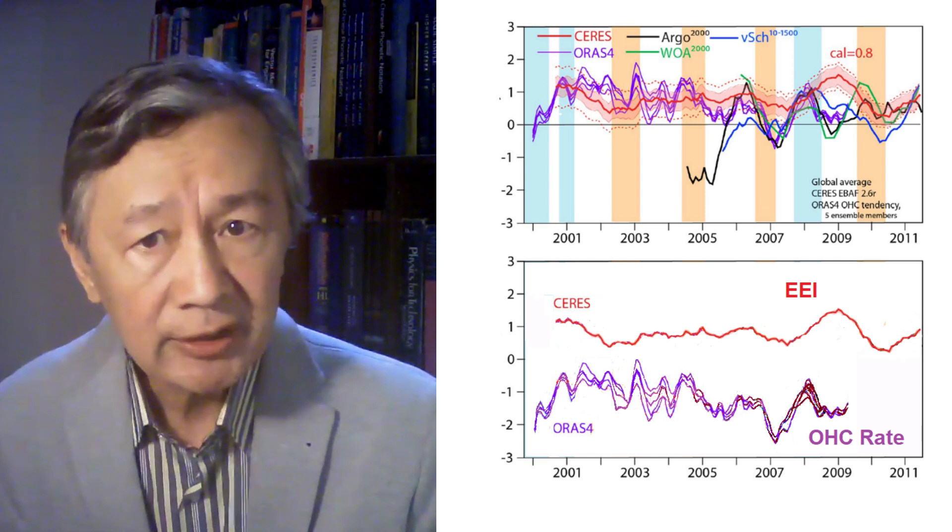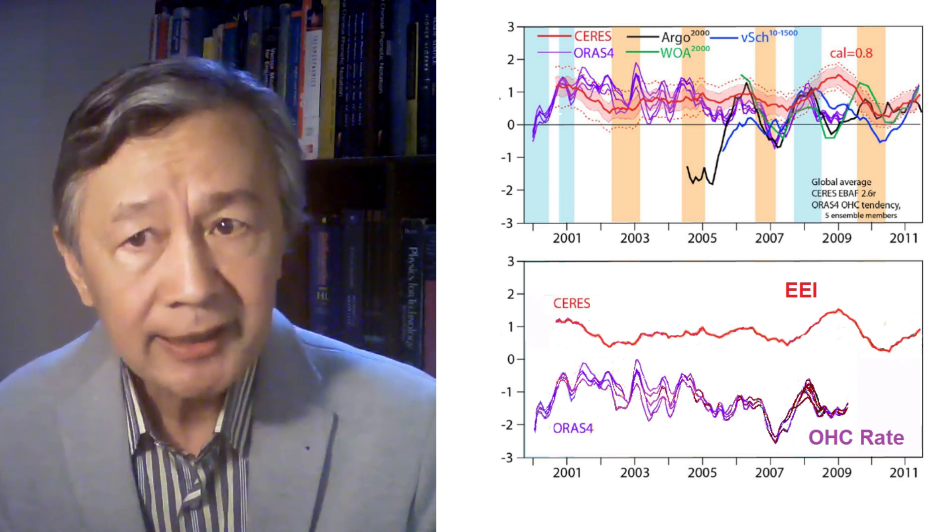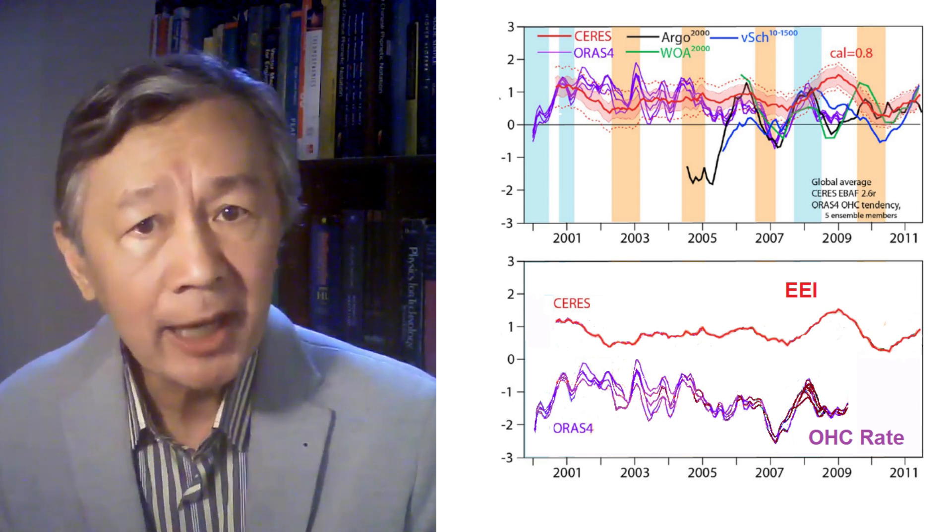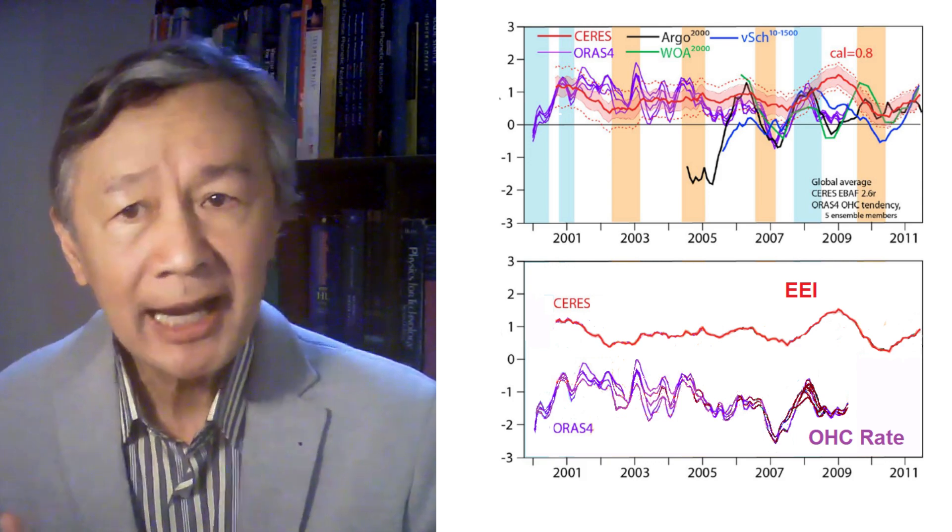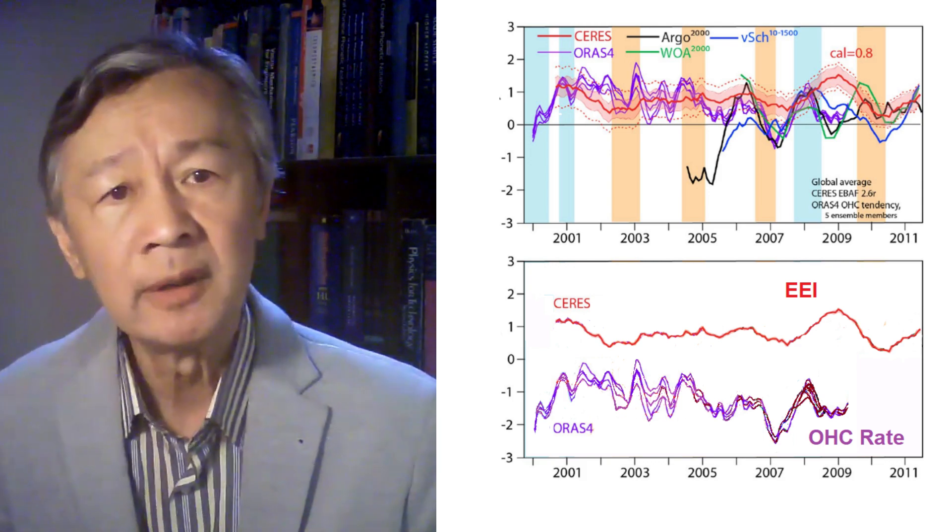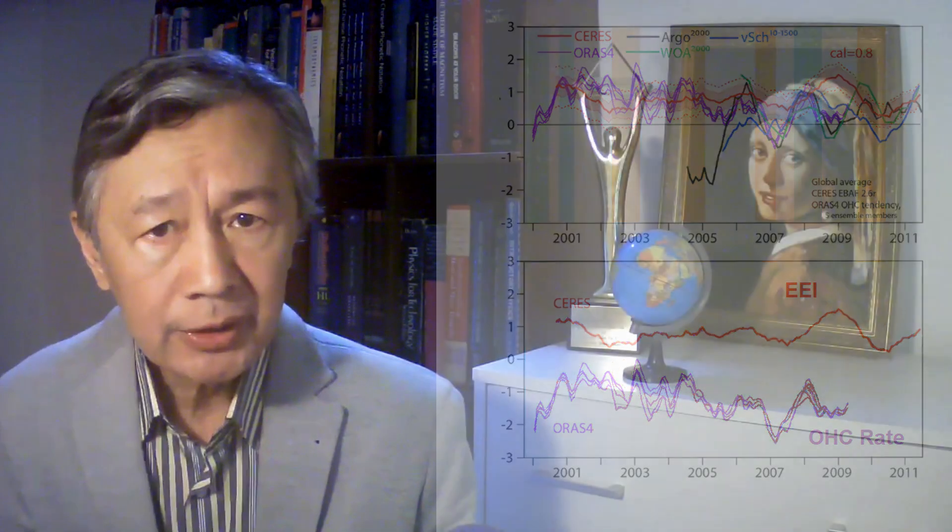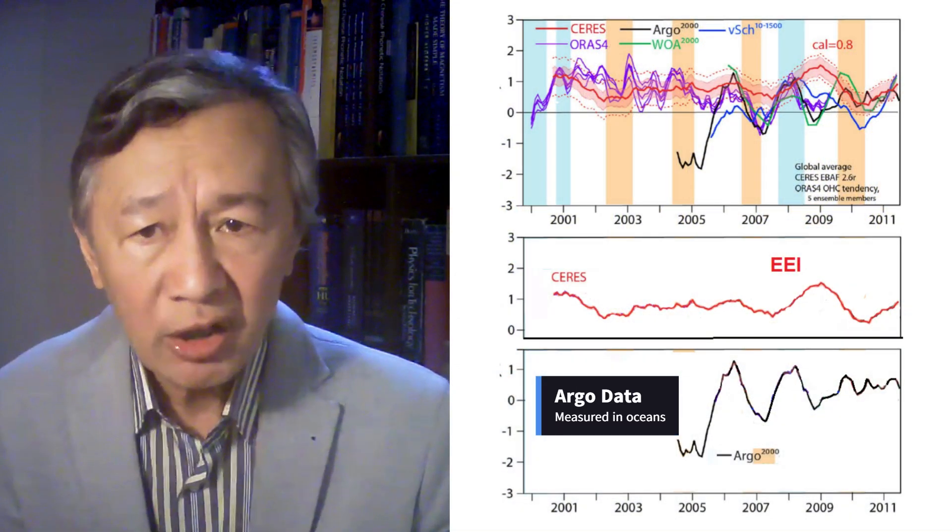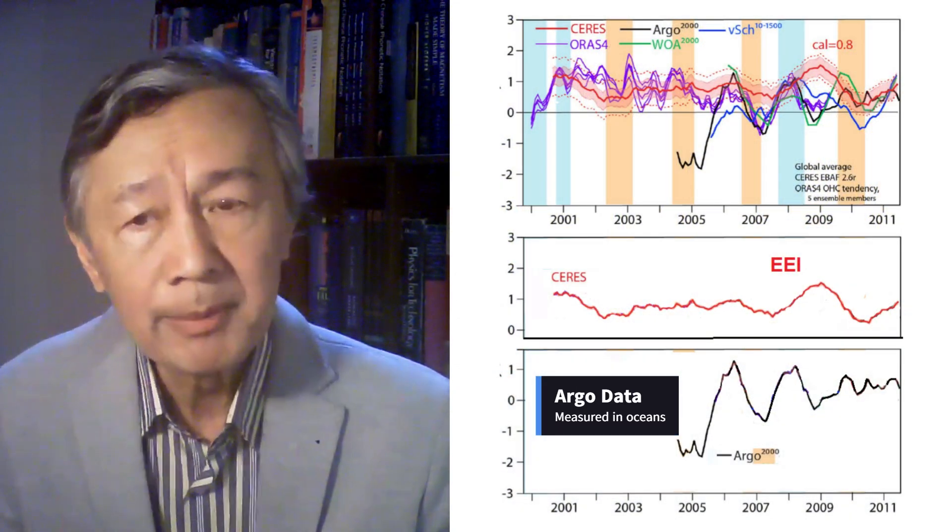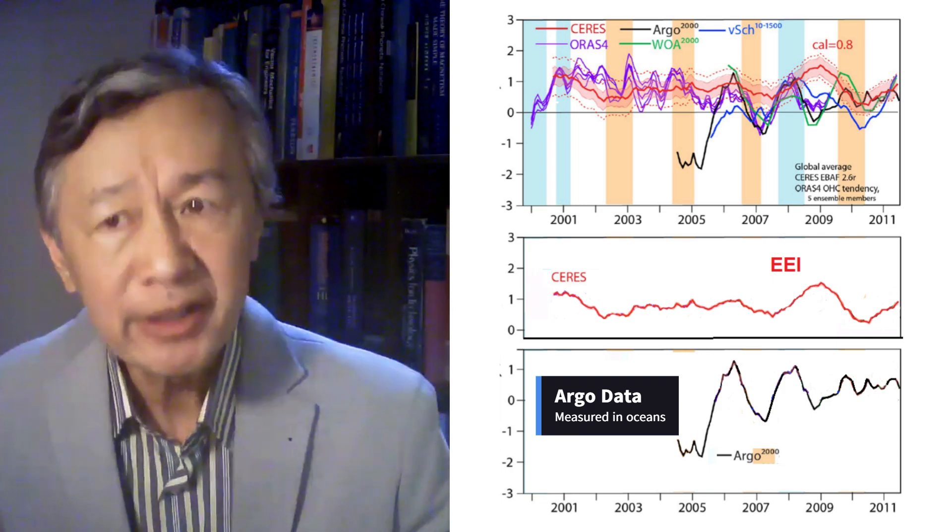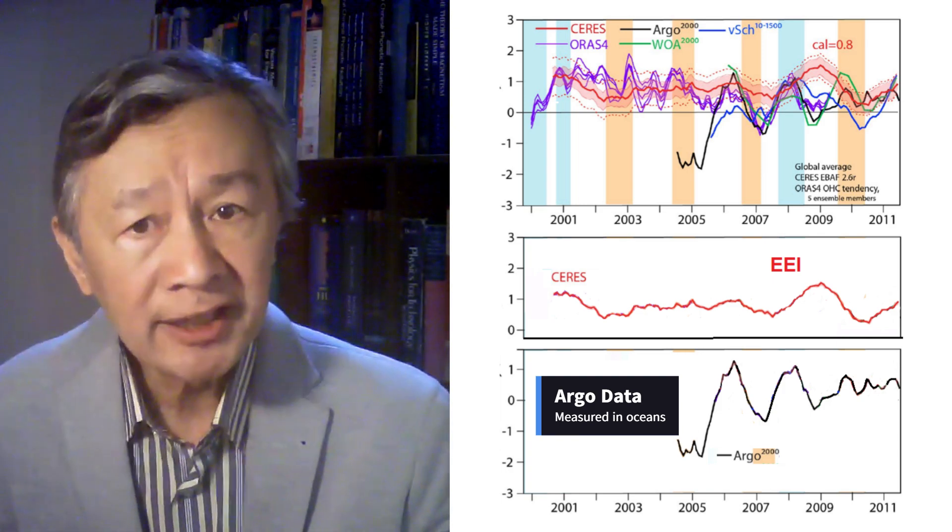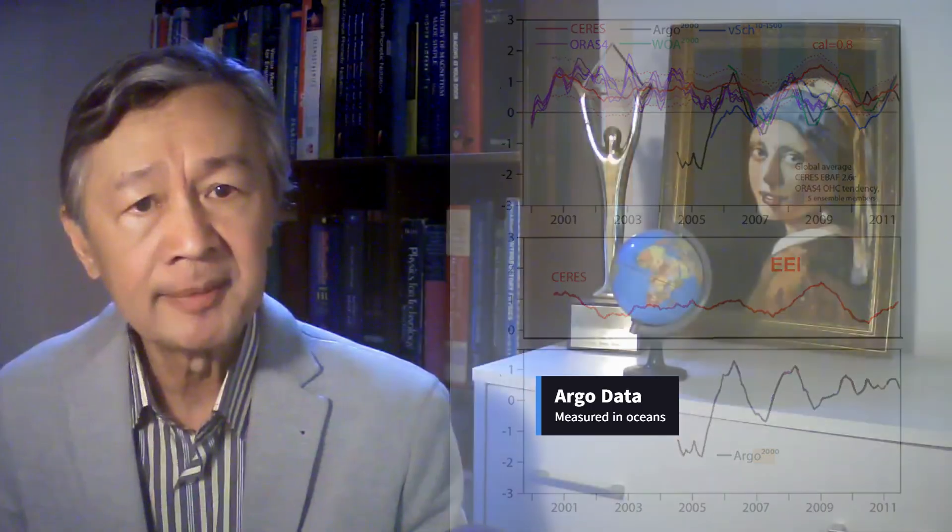In addition, after 2008, the fabricated CERES EEI became totally different from the calculated first derivative of OHC. Also, Trenberth didn't mention the in-situ ARGO data around 2005. As you can see, it's close to negative 2 watt per meter square, nearly 3 watt per meter square lower than the adjusted CERES EEI. Here, I would say there's not great agreement between these two things.